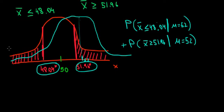Now graphically, how does that look? Well, we are looking for the probability of having a value less than 48.04 given that the mean is 52. So we're working with the blue distribution — we want to know the area to the left of 48.04 below the blue distribution. We're looking for this tail, this probability over here.